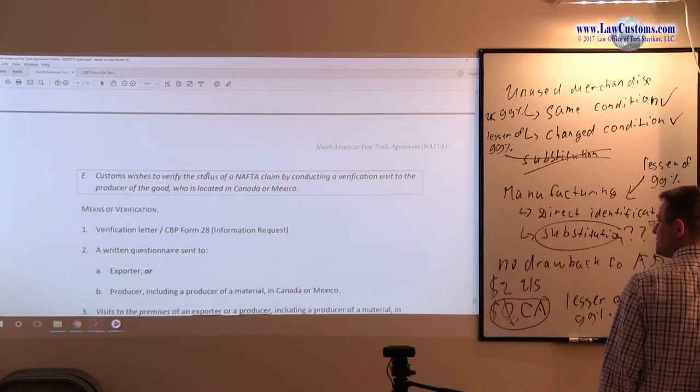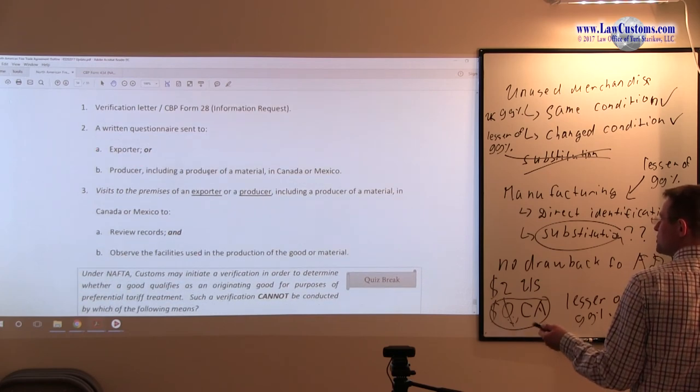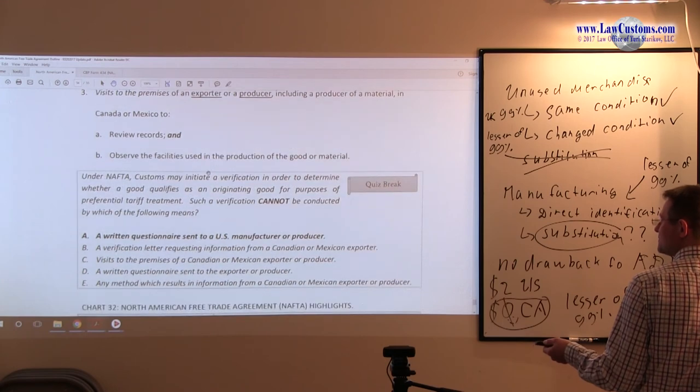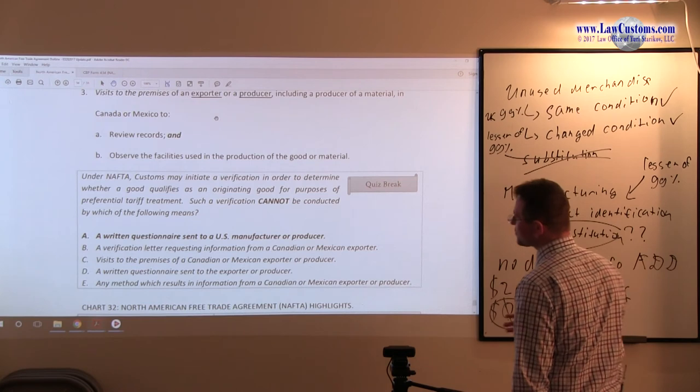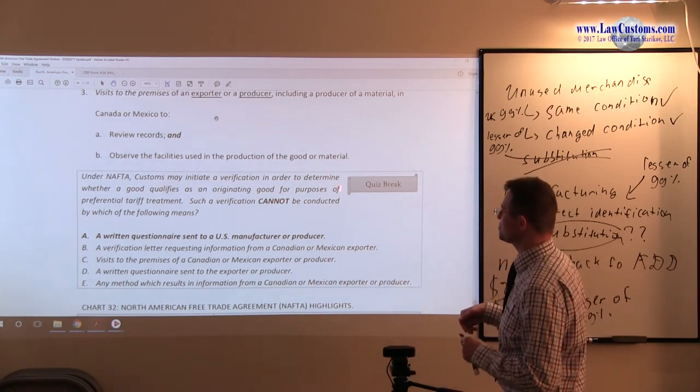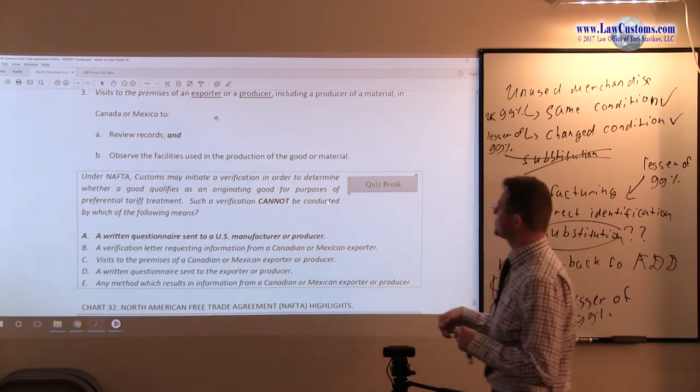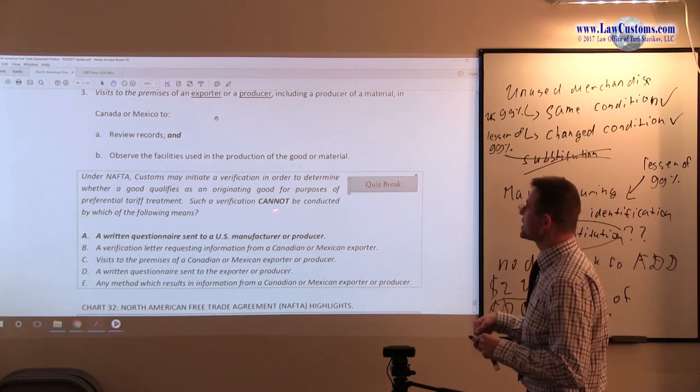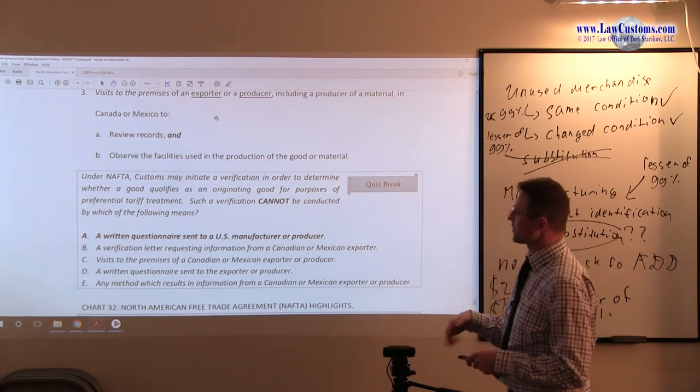So we will go to the laundry list, means of verification: letter, questionnaire, visit to premises. Kind of piggyback on that one. Under NAFTA, customs may initiate verification in order to determine whether a good qualifies as an originating good for purposes of preferential tariff treatment. Such verification cannot be conducted by which of the following means?